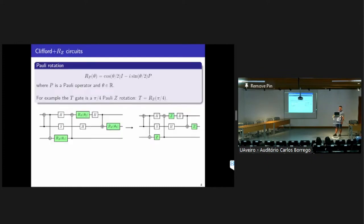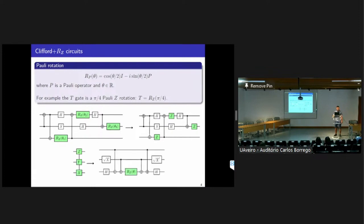A parity rotation is defined as follows for an angle theta and some parity operator P. For example, the T gate is a pi-over-4 parity Z rotation. Here we have an example of a Clifford plus RZ circuit. Because the angles don't really matter for the formulation of our problem, I will draw the parity rotations using green boxes with the parity matrix inside. A parity rotation can be on multiple qubits. There exist multiple ways to implement a given parity rotation, and what we want to do is implement our parity rotations with a minimal number of Hadamard gates.